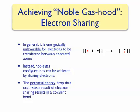We can draw shaded circles around each atom to show how many electrons are in the new valence shell for each atom. The hydrogen on the left has two valence electrons, as does the hydrogen atom on the right. Once again, both atoms have a noble gas configuration.